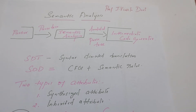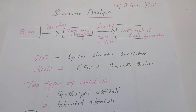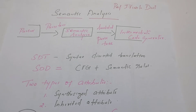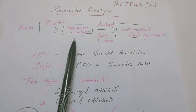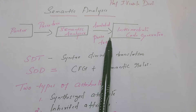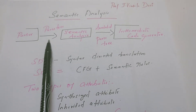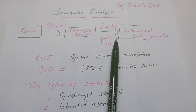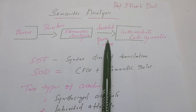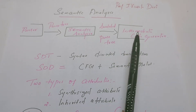Hello everyone, welcome back to my channel. Today we are continuing the semantic analysis. Yesterday I introduced syntax directed translation. First, let's recap: the semantic analyzer takes a parse tree as input and produces an annotated parse tree as output. An annotated parse tree is a decorated parse tree — the actual parse tree is furnished with useful information that helps the compiler translate the programming language. This annotated parse tree is itself one of the intermediate code forms and helps the compiler for intermediate code generation.